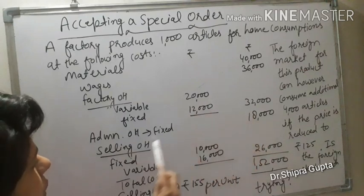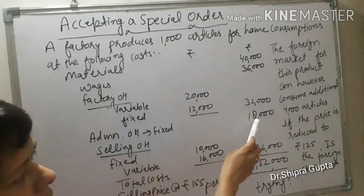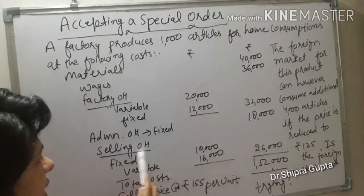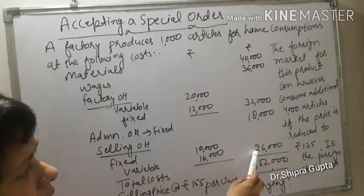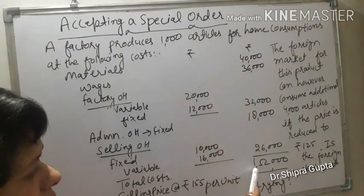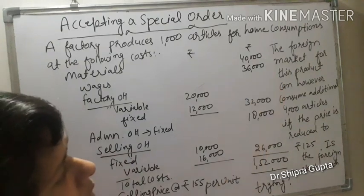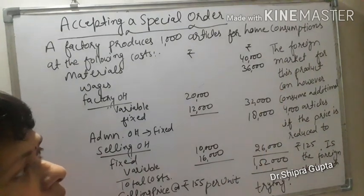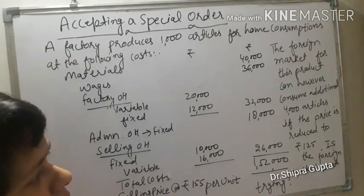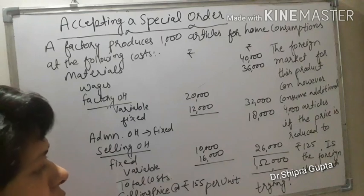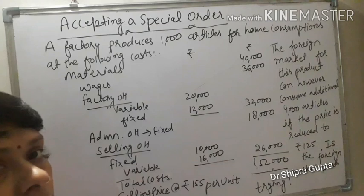Total factory overhead is ₹32,000. Administration overhead, all fixed, is ₹18,000. Selling overhead: fixed ₹10,000, variable ₹16,000, total selling overhead ₹26,000. Total cost is ₹1,52,000 and selling price is ₹155 per unit. The foreign market can consume an additional 4000 articles if the price is reduced from ₹155 to ₹125. The question is: is the foreign market worth trying?